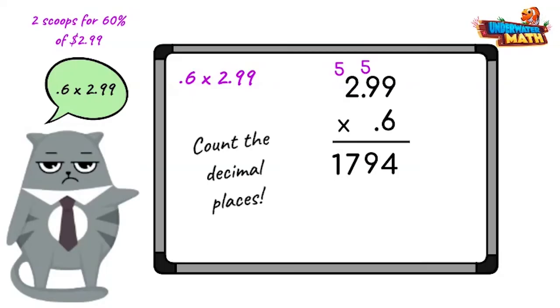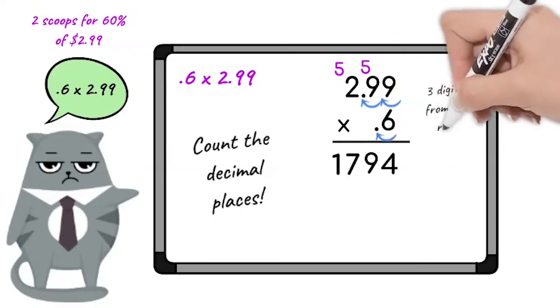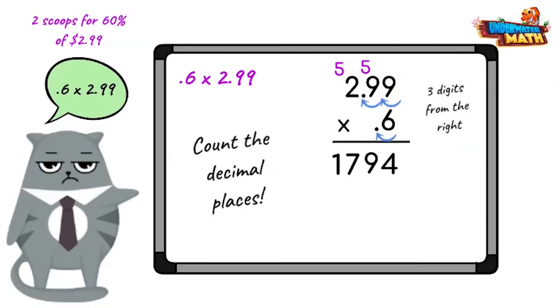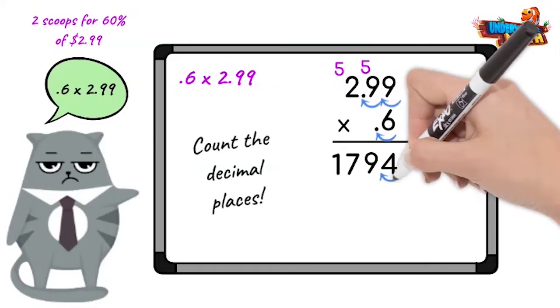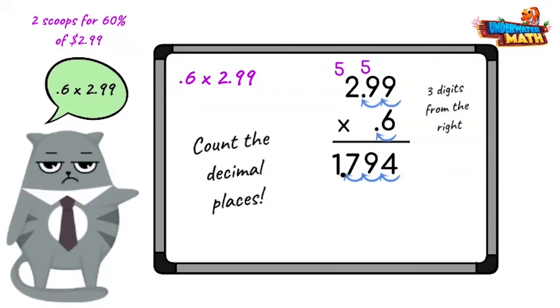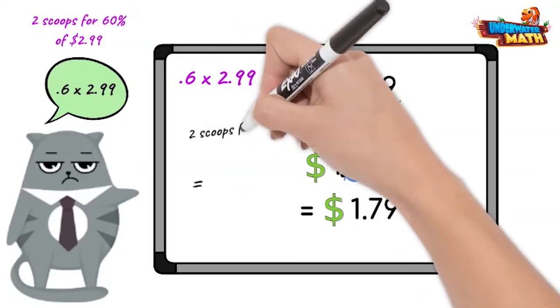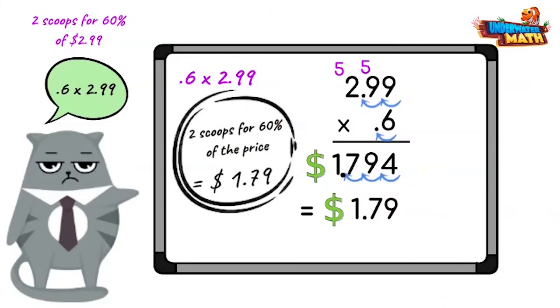Now to count all the decimal places in our problem, we have one, two, three digits to get to the decimal points. So we will jump three digits from the right in the answer. But Grumpy Kitty, that doesn't look like a dollar amount. I got you. Round to the nearest hundredth, and bada boom. Impressive. We have two scoops for a dollar 79.